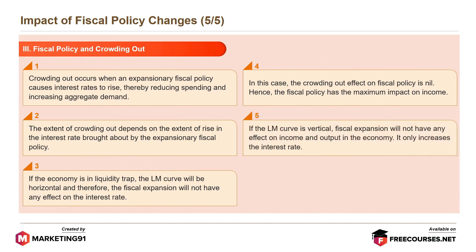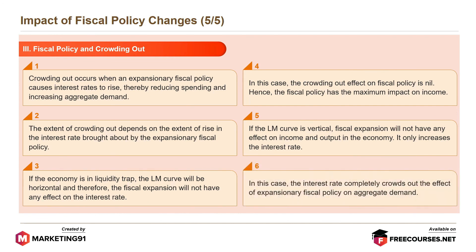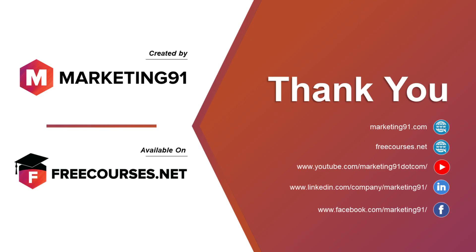If the LM curve is vertical, fiscal expansion will not have any effect on income and output in the economy — it only increases the interest rate. In this case, the interest rate completely crowds out the effect of expansionary fiscal policy on aggregate demand. Thank you.